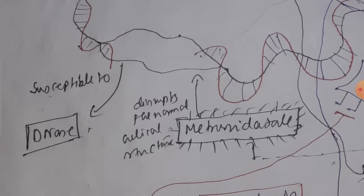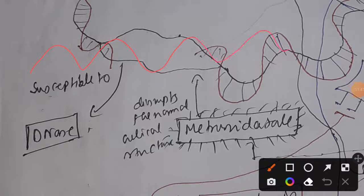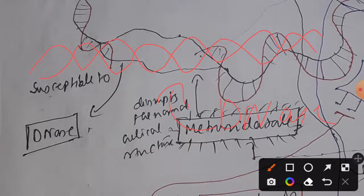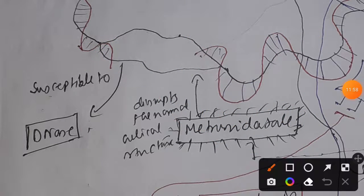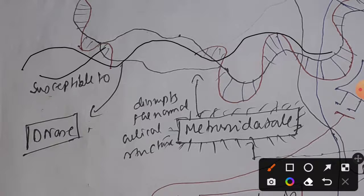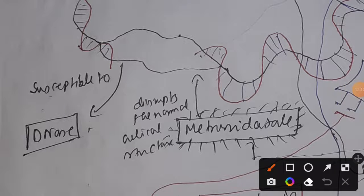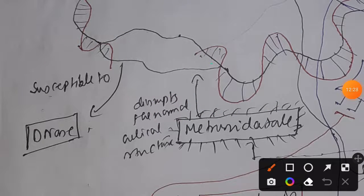DNase, as its name suggests, digests DNA. However, when DNase encounters a normal double-stranded DNA molecule, it cannot show its activity. But if the DNA has been disrupted into single-stranded form, DNase can show its activity and causes fragmentation of the single-stranded DNA molecule. That is how metronidazole works — it disrupts the normal double-stranded helical structure, making the DNA susceptible to DNase, resulting in DNA fragmentation.